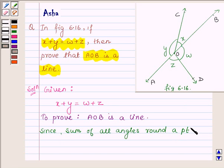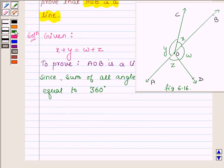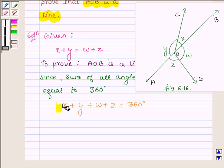So we have the sum of these four angles: x plus y plus w plus z equals 360 degrees.